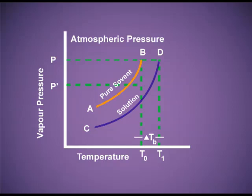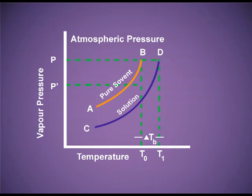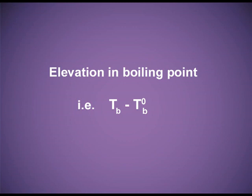But in the case of curve CD — the curve for the solution — at temperature T°B, the vapour pressure is very less than atmospheric pressure, so the solution will not boil. If we want the solution to boil, we heat it more. At temperature TB, the vapour pressure increases and becomes equal to atmospheric pressure. At point D you can see it is becoming equal to atmospheric pressure and it is boiling. So there is an increase in the boiling point. This increase is known as ΔTB — elevation in boiling point — and it equals TB minus T°B.